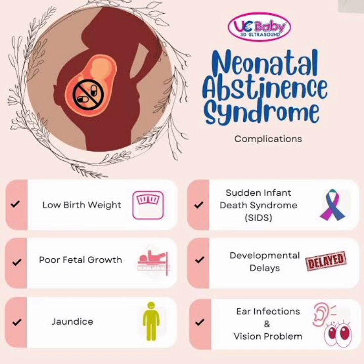So Neonatal Abstinence Syndrome is when the mother was pregnant and takes illicit drugs like cocaine or alcohol, which pass through the placenta to the fetus. The baby inside also becomes dependent. After birth, when we cut the umbilical cord, the connection is severed and the baby is no longer receiving the alcohol or tobacco, so the baby shows withdrawal symptoms.